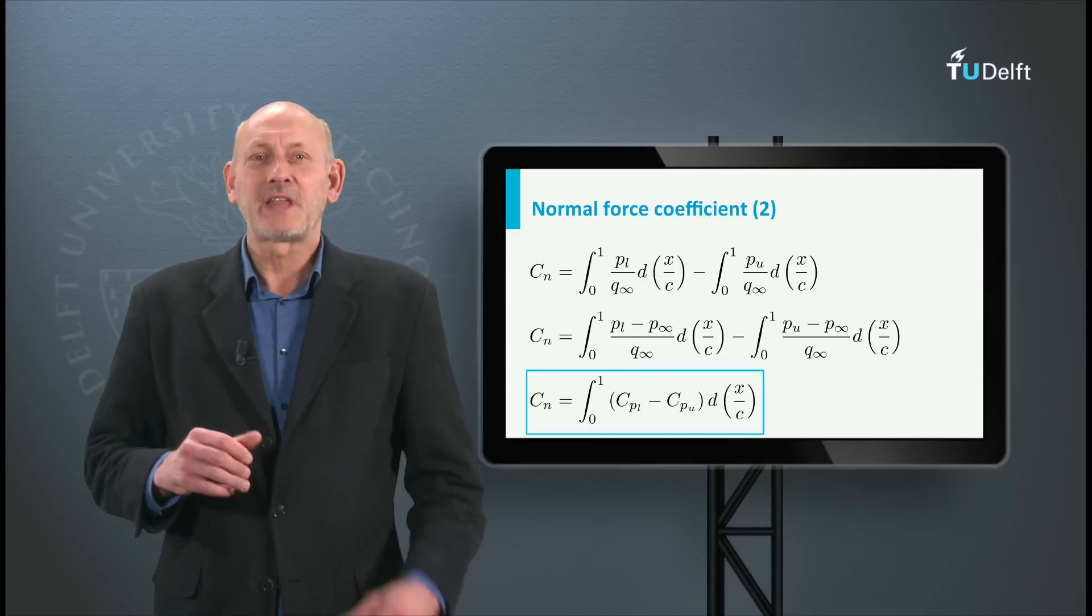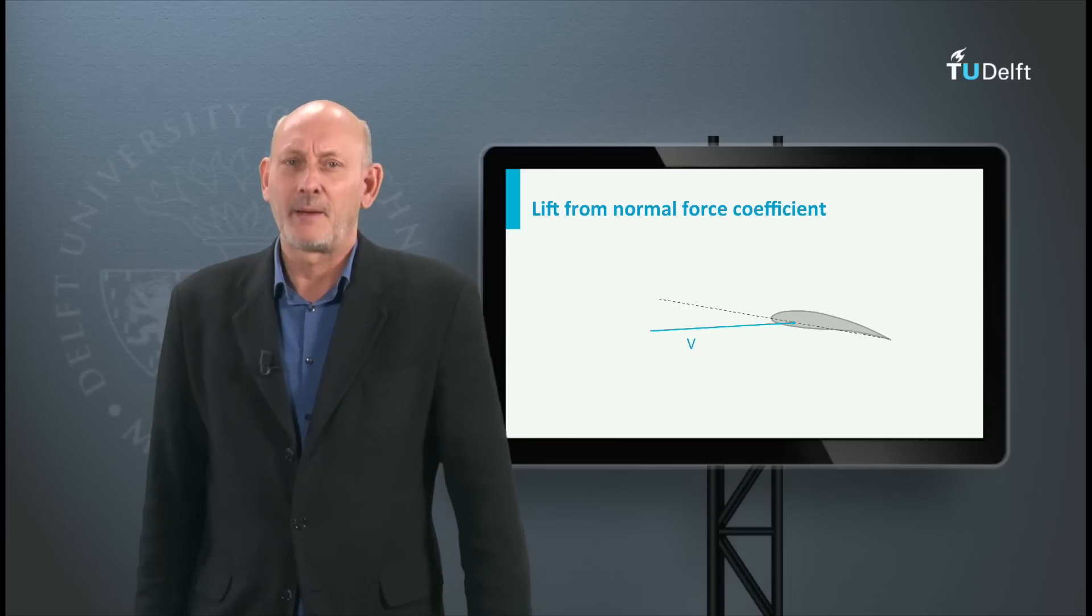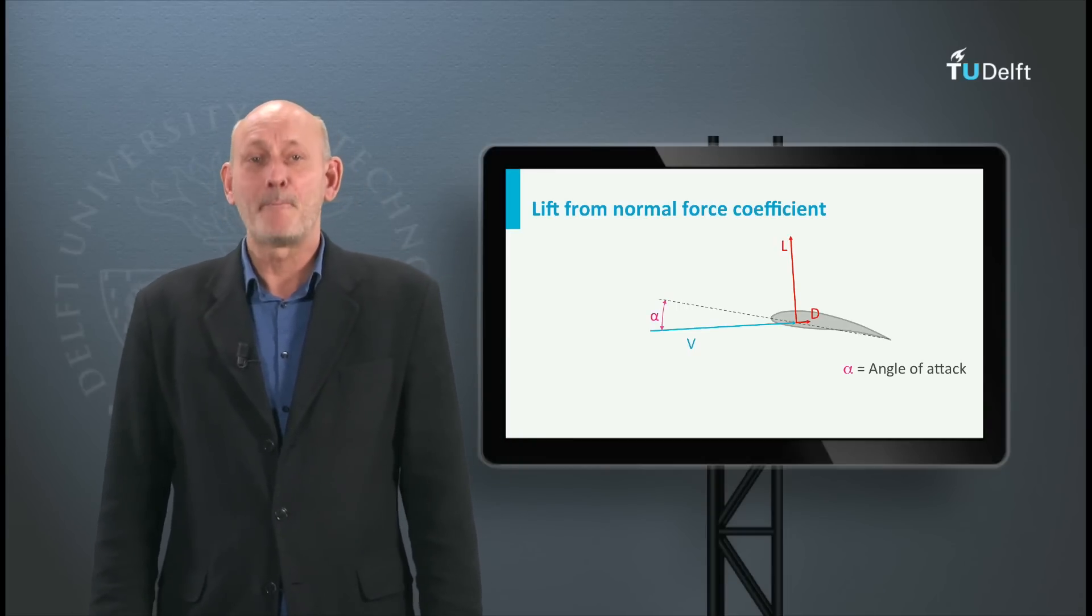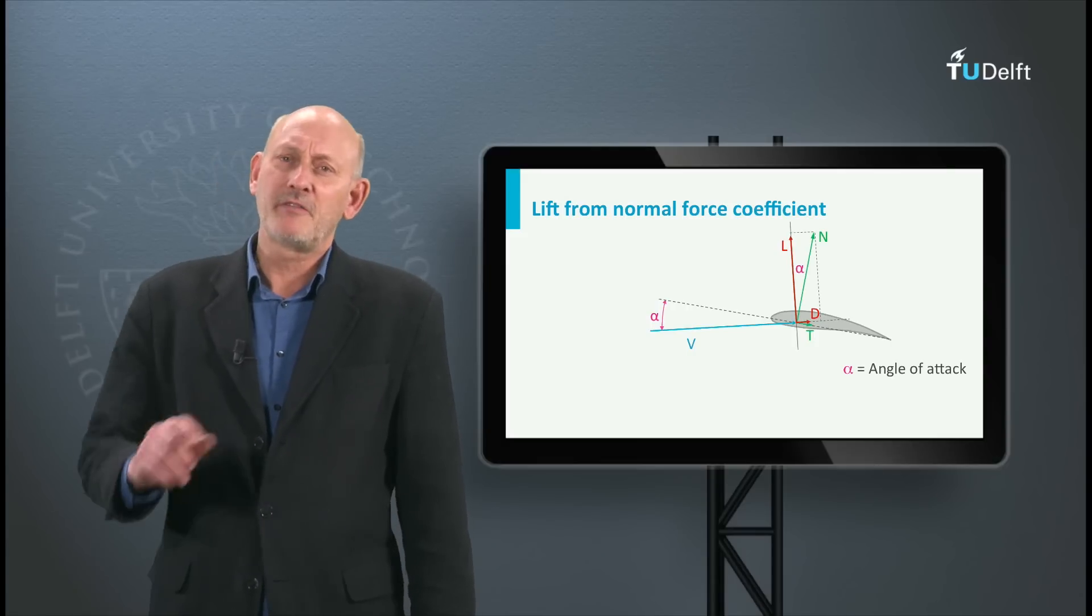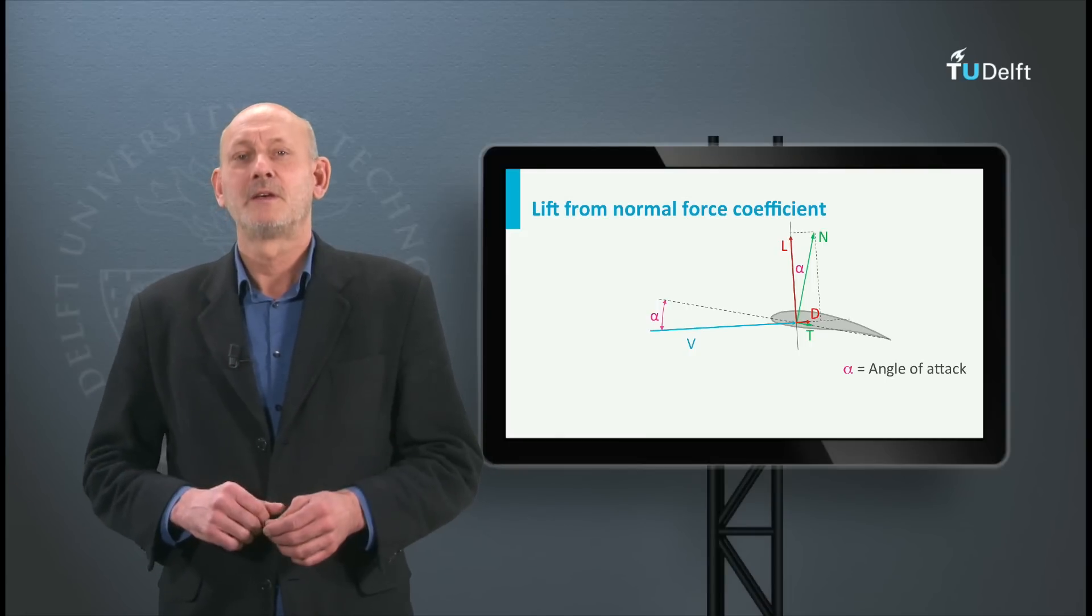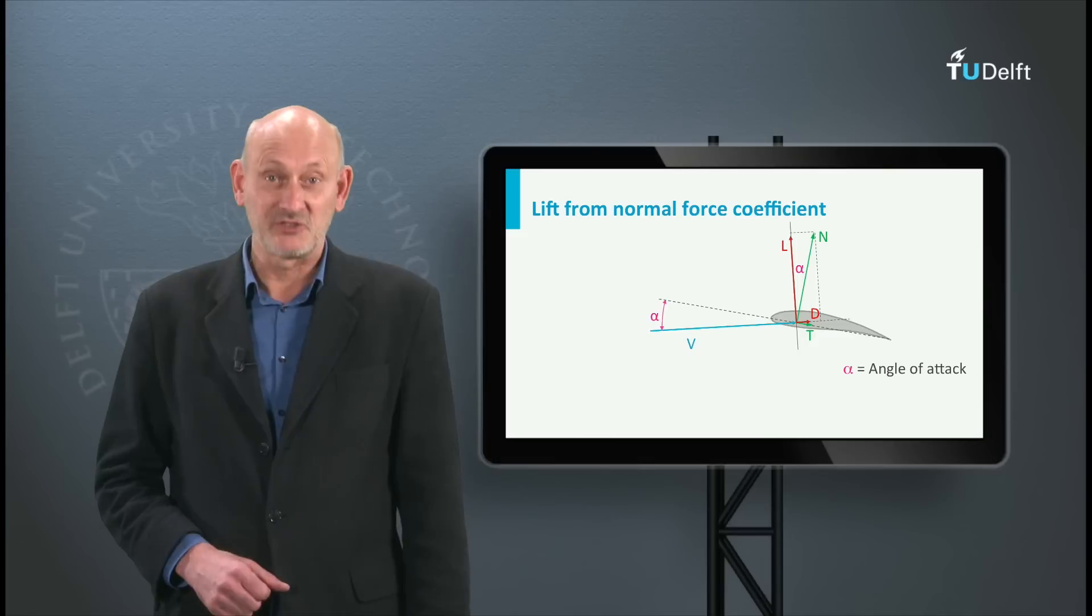This is a nice result. But how do we get to the lift coefficient? Look at the next diagram. By definition the lift and drag are perpendicular and parallel respectively to the free stream velocity vector. However, we can also express the loading on the airfoil into a force perpendicular to the chord line, the normal force n and the force in chord direction t, the tangential force.